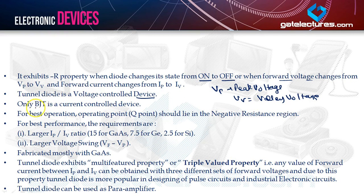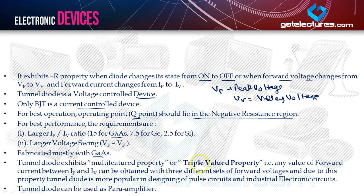The tunnel diode is a voltage-controlled device — except BJT, every other device is voltage-controlled; BJT is the only current-controlled device. For best operation, the Q point should always lie in the negative resistance region. For best performance, the requirements are a larger IP/IV ratio — nearly 15 for gallium arsenide, 7.5 for germanium, and 2.5 for silicon — which is why gallium arsenide is preferred. A larger voltage swing VF−VP is also required. The tunnel diode exhibits a multi-valued or triple-valued property: any forward current between IP and IV can be obtained with three different sets of forward voltages, making it popular in designing pulse circuits and industrial electronic circuits. It can also be used in para-amplifiers.